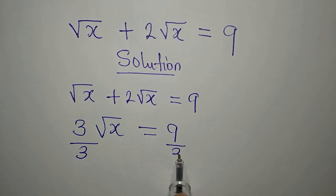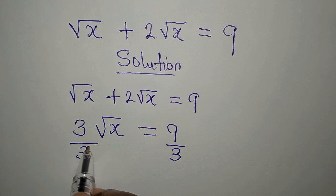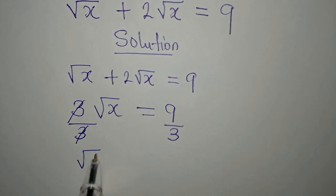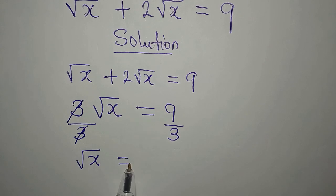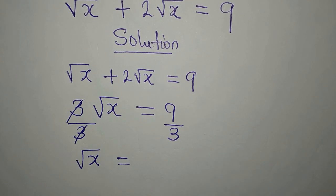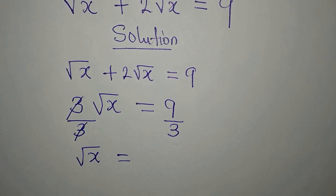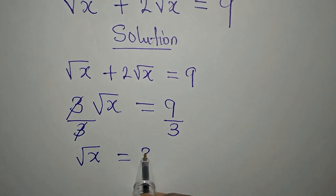And this has to be divided by 3 so that 3 can go. Then we have square root of x to be equal to 9 divided by 3, and 9 divided by 3 will give us 3.